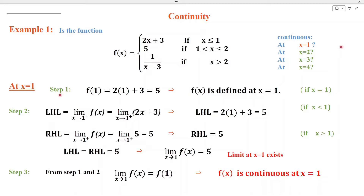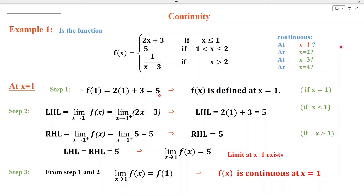We shall use the three-step continuity test. In step number 1, we obtain the value of this function at x = 1. When x = 1, the value of the function is 2x + 3. Substituting x = 1 and simplifying, we get f(1) = 5, which is a real number and not infinity. This implies that f(x) is defined at x = 1, and step number 1 is satisfied.